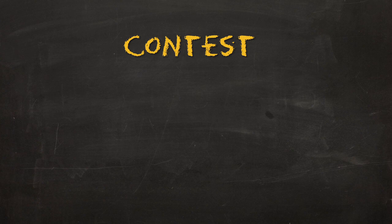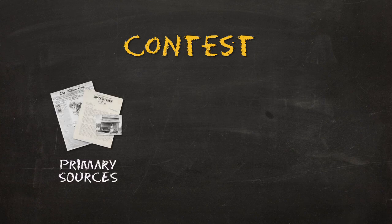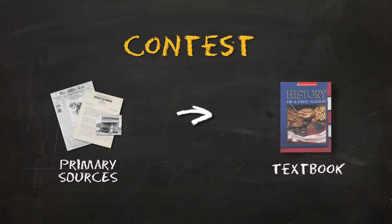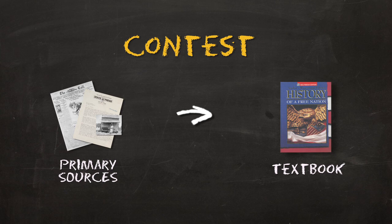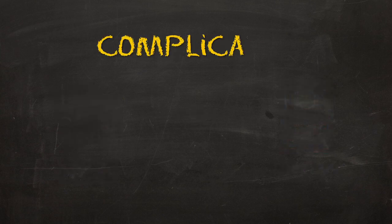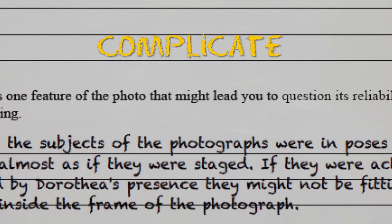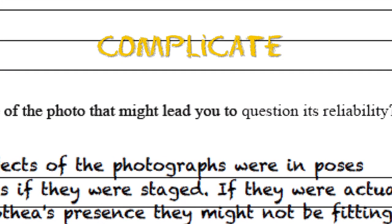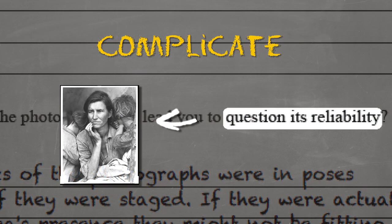OUTs that contest use primary sources to challenge the facts of the textbook or offer competing interpretations. OUTs that complicate provide students with evidence that disturbs the textbook's tidy narrative or reveals alternative interpretations.